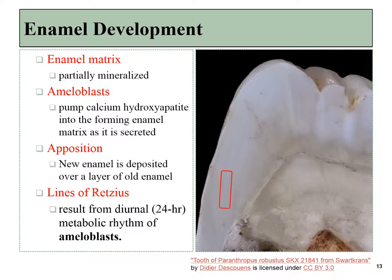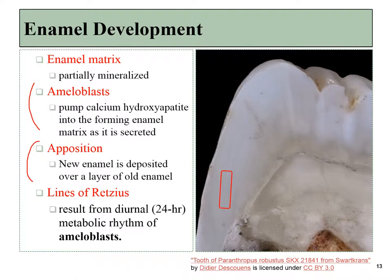When enamel is first produced, it is only partially mineralized. It will be fully mineralized later as the ameloblasts begin pumping more calcium and phosphate into the extracellular matrix where it can crystallize. Because those crystals are hard, the ameloblasts have to add layer upon layer upon layer. These layers are laid down in a 24-hour cycle, speeding up at night and slowing down during the day. For that reason, if we cut through a tooth, we can see lines that represent each layer of enamel formed in a 24-hour period — we call those the lines of Retzius.